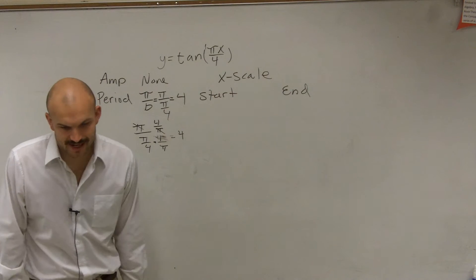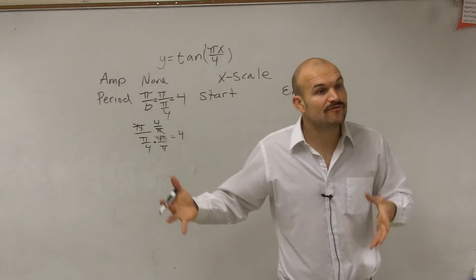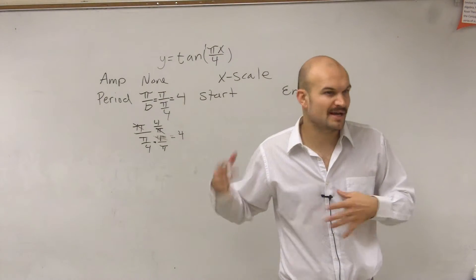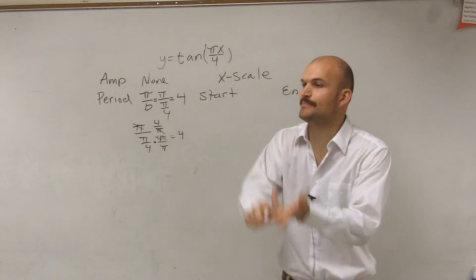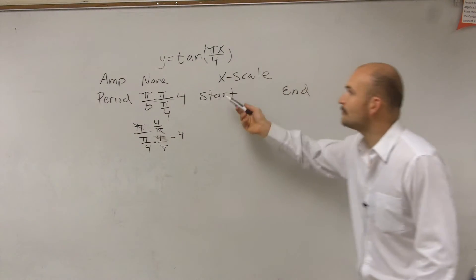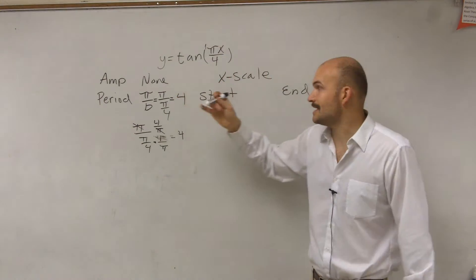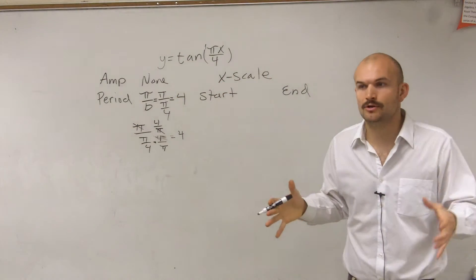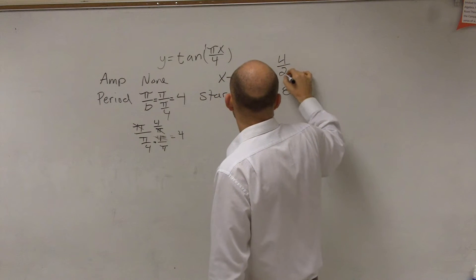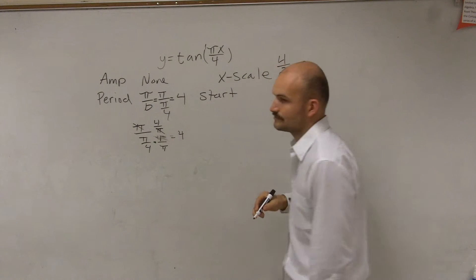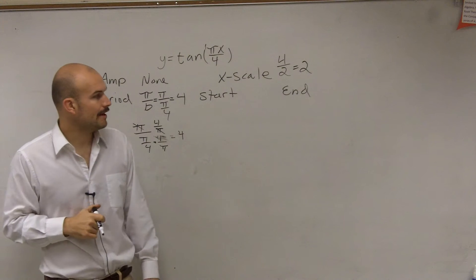So then we look at our x scale. Now, remember our x scale, what I did was I took our period and we divided it by 4. We took whatever our period was and we divided it by 4 for the critical points. However, for our tangent and cotangent, we don't have 4 critical points. All we're going to have is 2. So I'm just going to take my period and divide it by 2. So now my x scale is going to be 2.